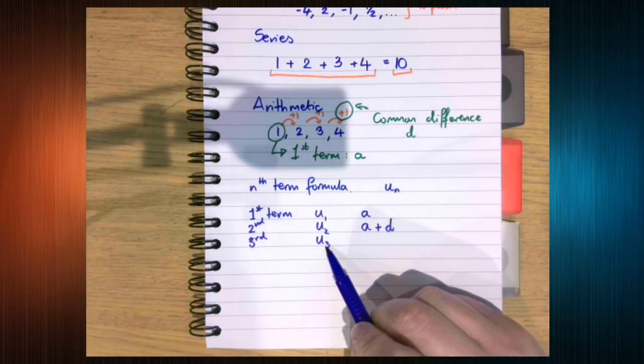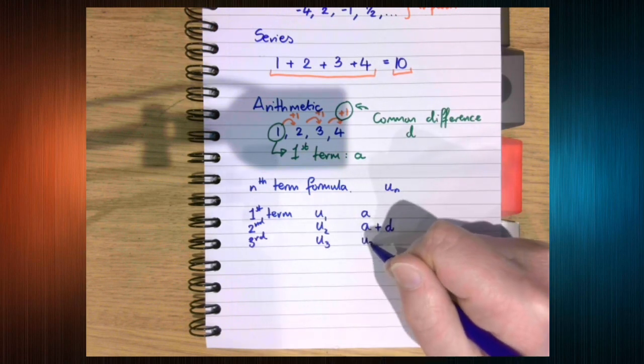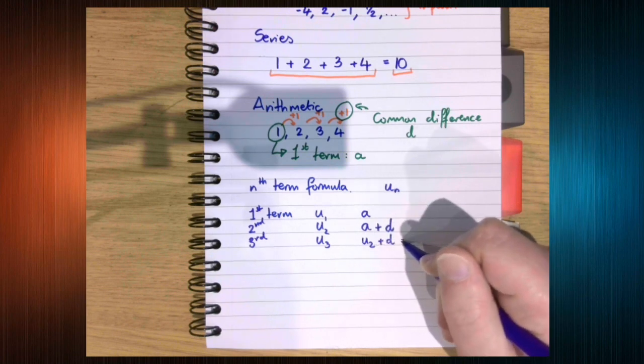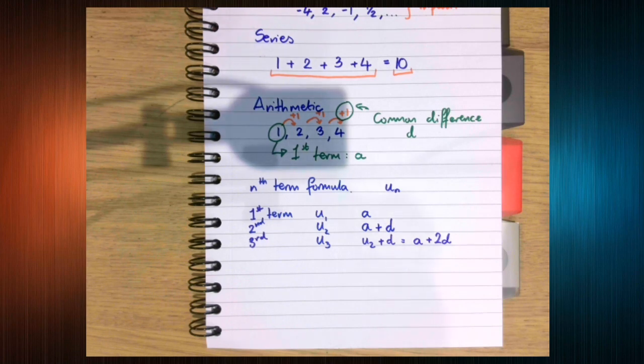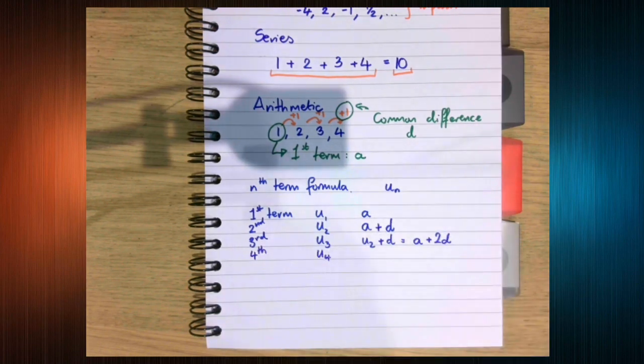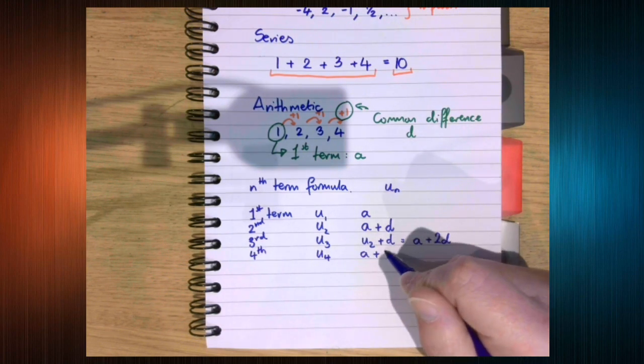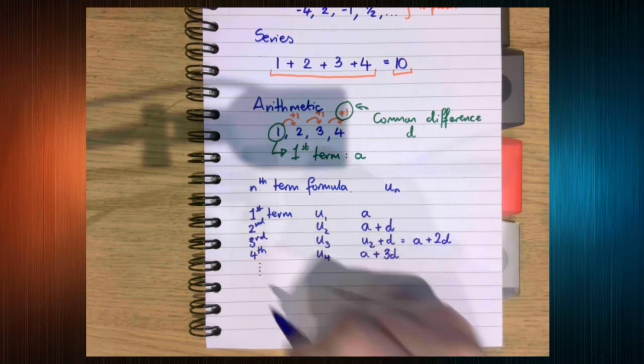Now the third term is going to be the second term plus the common difference. So we get a plus d plus d. So what would the fourth term be? Write it down. Yep, a plus 3d.